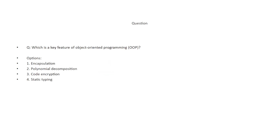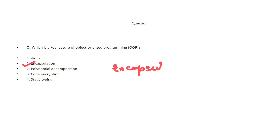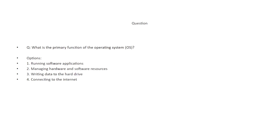What is a key feature of object-oriented programming? OOP has several key principles. The options are: encapsulation, polymorphism, decomposition, code encryption, and static typing. The correct answer is option A — encapsulation.